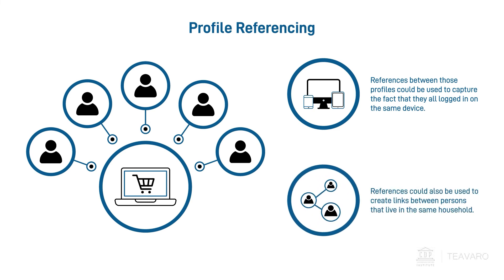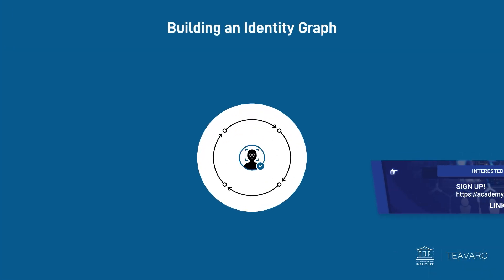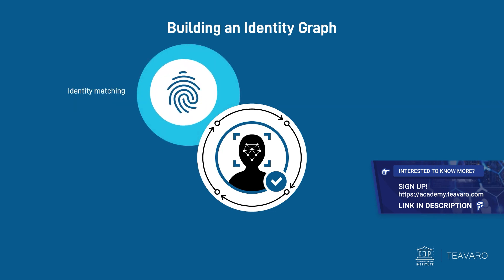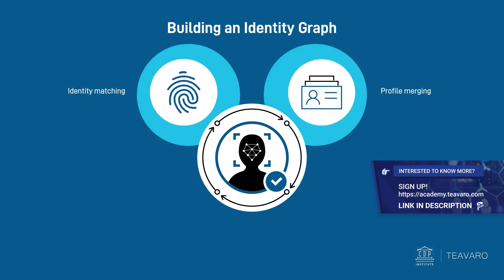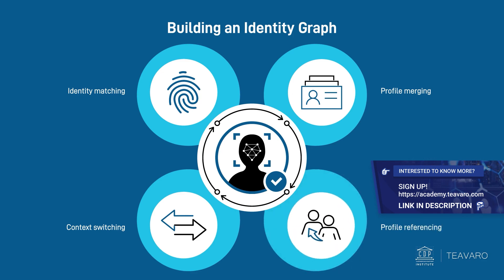References could also be used to create links between persons that live in the same household. As this example shows, building an identity graph requires identity matching, profile merging, context switching, and profile referencing.